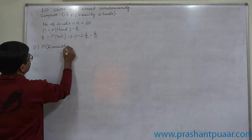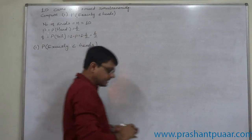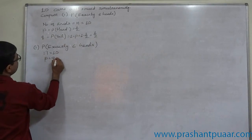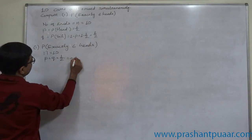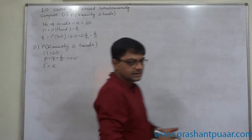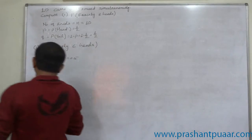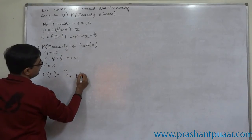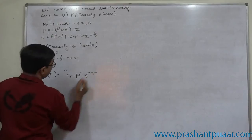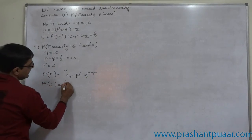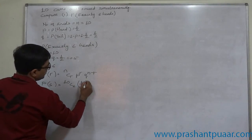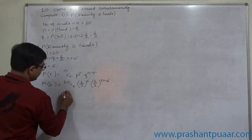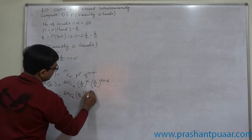In the first case, we require the probability of exactly 6 heads — that means exactly 6 successes out of 10. So n = 10, p = q = 1/2 or 0.5, and r = 6 — only 6, neither more nor less. According to binomial distribution, P(r) = nCr × p^r × q^(n−r), so P(6) = 10C6 × (1/2)^6 × (1/2)^4.